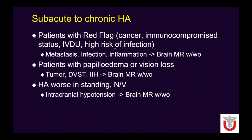For subacute-to-chronic headache with red flags: patients with cancer, immunocompromised status, IV drug abuse, or high risk for infection may start with MRI because CT may not be sensitive enough. A patient with papilledema or visual changes could have a tumor, deep venous sinus thrombosis, or intracranial hypertension — brain MRI is a good starting point. Example: a patient with a left temporal headache on post-contrast T1 images shows leptomeningeal thickening and enhancement extending to the occipital lobe — this patient had lung cancer metastasis with leptomeningeal spread.